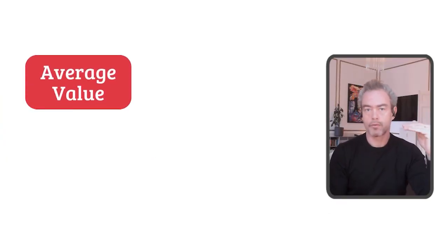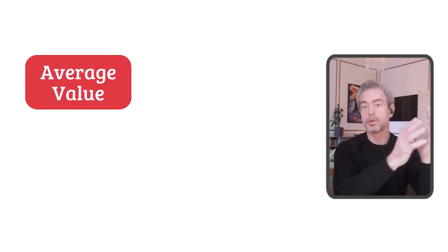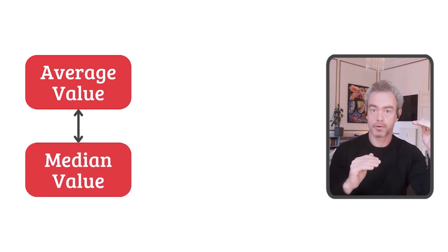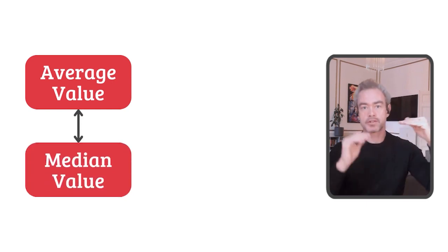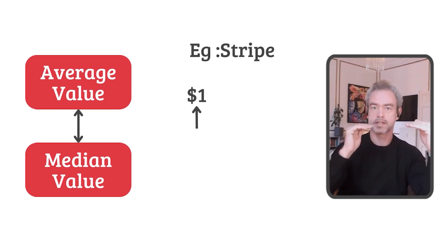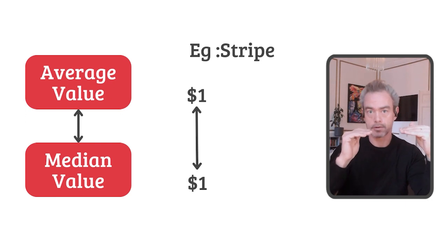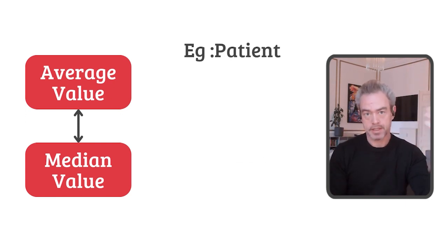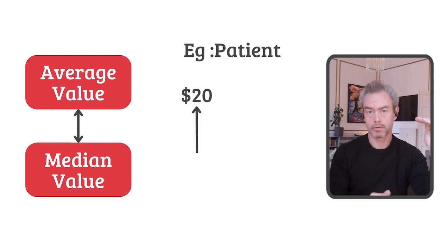This is the concept of metric density: how does the average value of whatever unit you're pricing by stack up against the median value of that unit. In the Stripe example, the pricing unit is dollars. The average value of a dollar is precisely the median value of a dollar, which is a dollar — so you have perfect density. But in the patient example, the average value is $20 while the median value was zero — a large discrepancy.